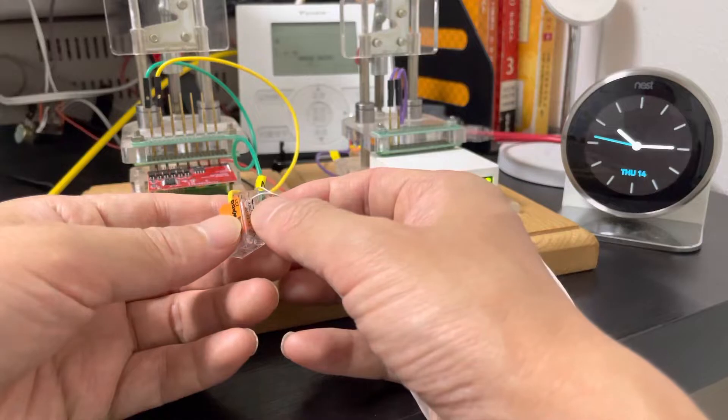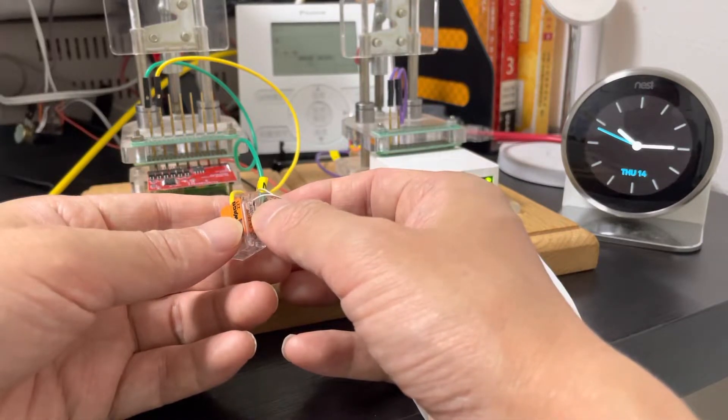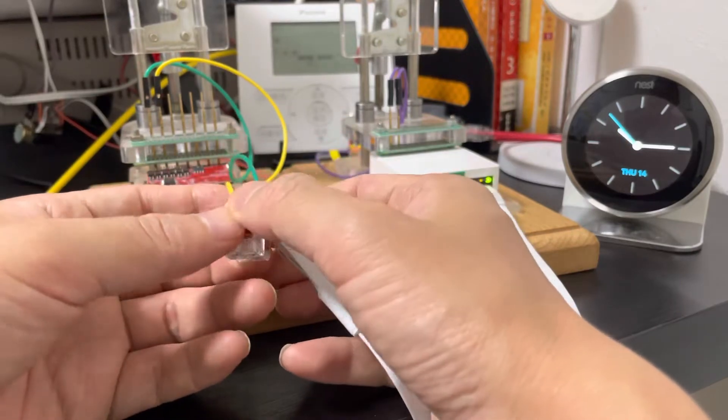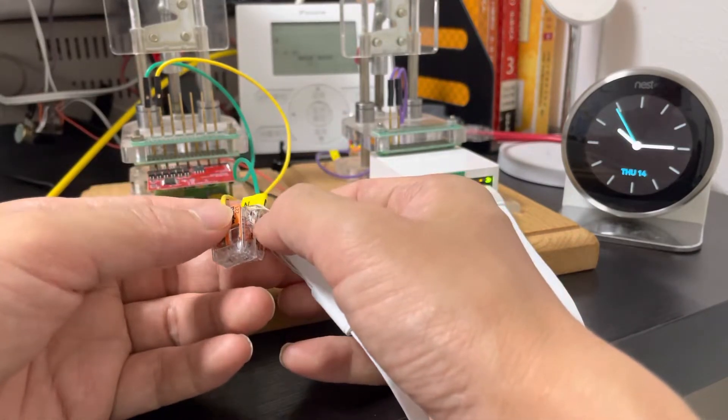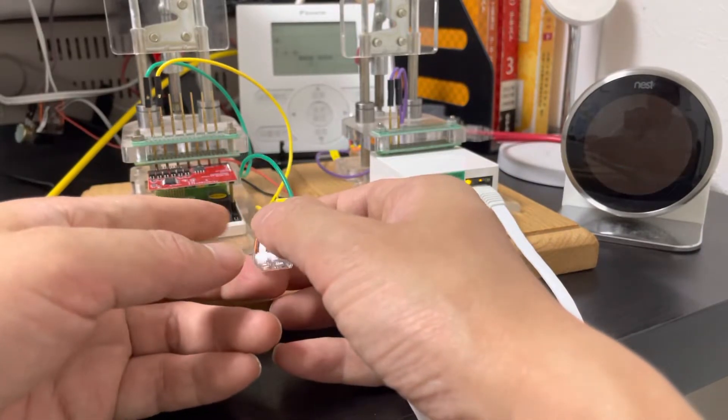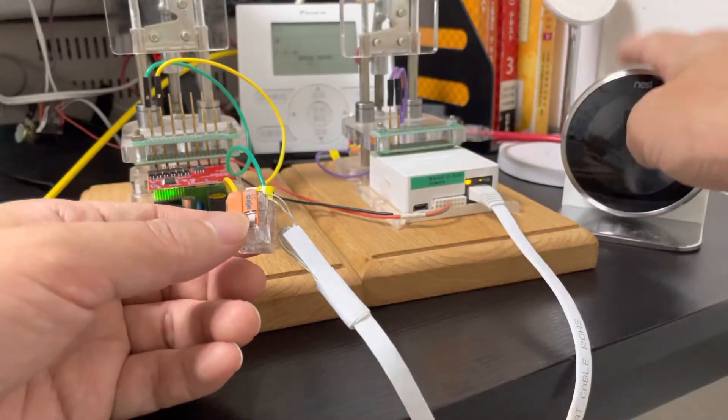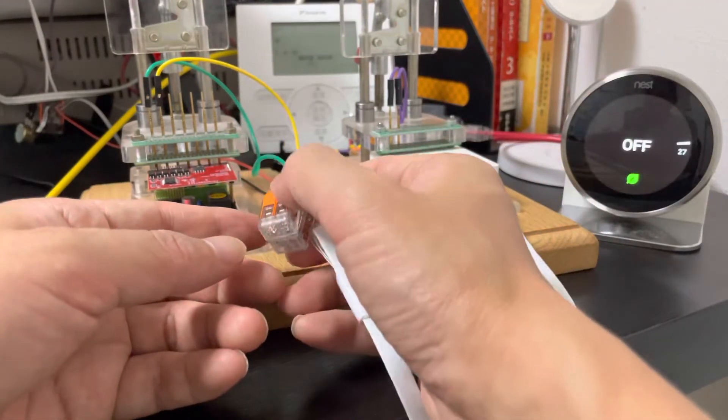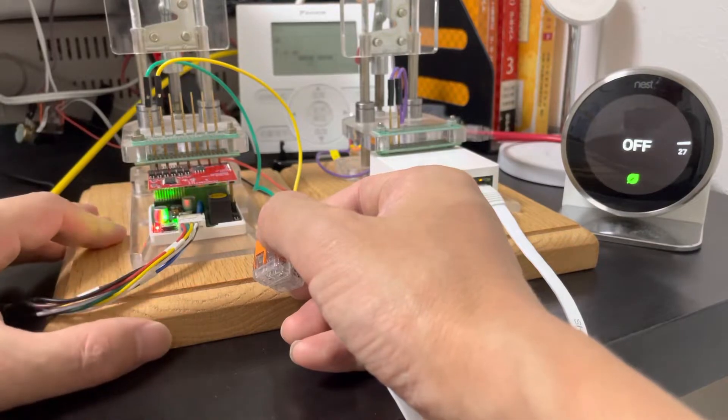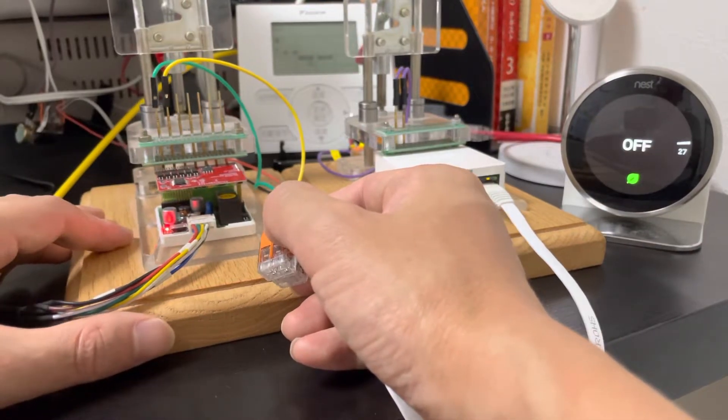Our adapter will recognize it is not coming from the master adapter. So we will not supply the power to the nest. So it will protect the nest from being destroyed by your wrong connection.